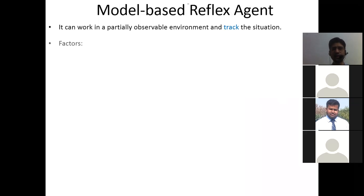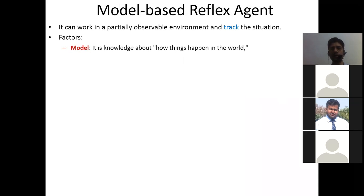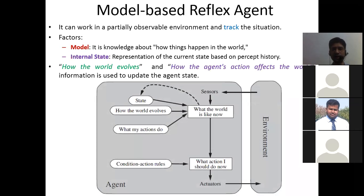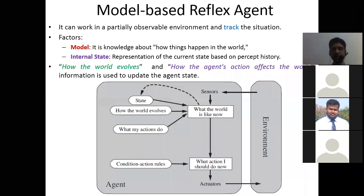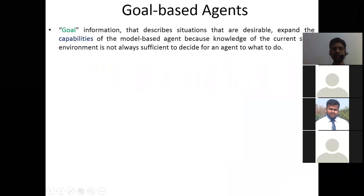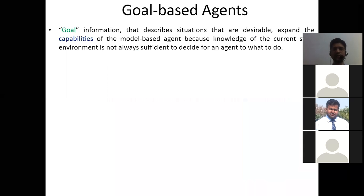In a model-based reflex agent, we partially observe the environment through models and internal states. The agent interacts with the environment by understanding the state — how the world evolves and what your actuators are doing — and what effect those actions have on the environment. Based on what the world is like now after your actions, condition-based rules are applied and actions are taken through the actuators.